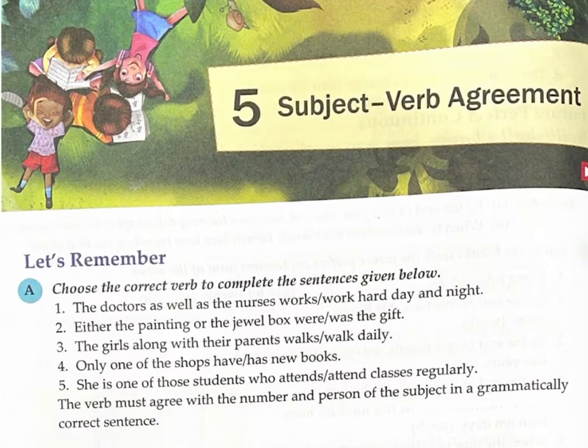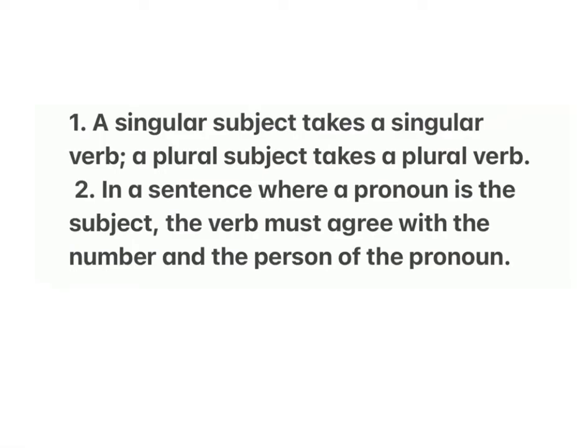Lesson 5: Subject-Verb Agreement. Rule 1: A singular subject takes a singular verb; a plural subject takes a plural verb. Rule 2: In a sentence where a pronoun is the subject, the verb must agree with the number and the person of the pronoun.